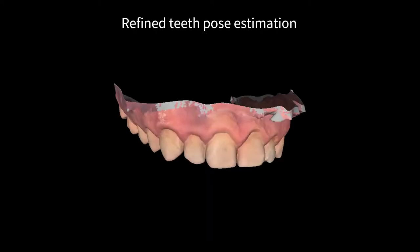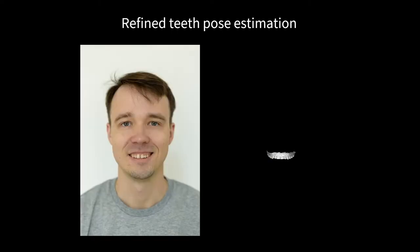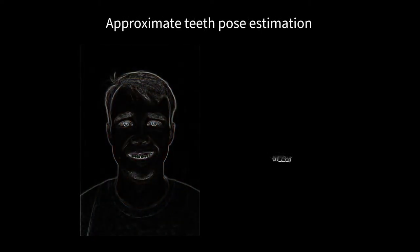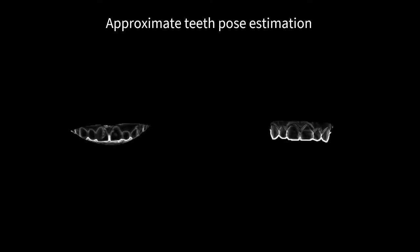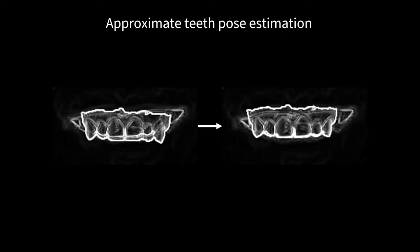In the second step, we use the dental scan of the patient to refine the teeth pose. We refine the teeth pose in the image space by applying a Sobel filter to the input frame image and the denture rendering. Using the previous facial landmarks, all irrelevant edges are masked out, and only dental edges are preserved.